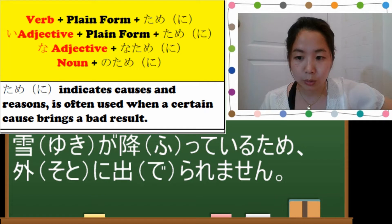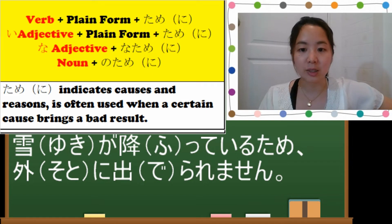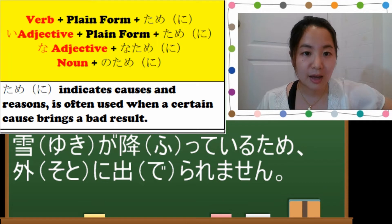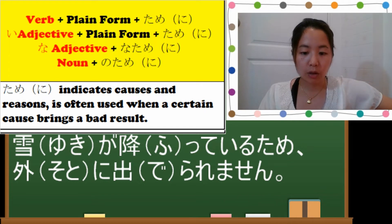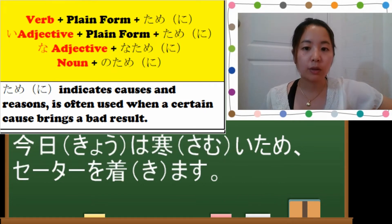Let's do another one. Since today is cold, I wear a sweater. Since today is cold, I will wear a sweater. Cold, so you put after the adjective. After i-adjective you just put tame-ni.